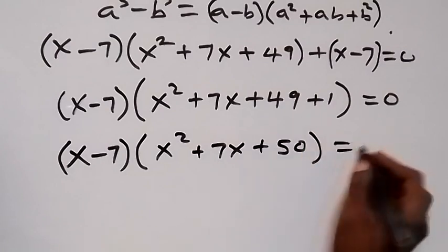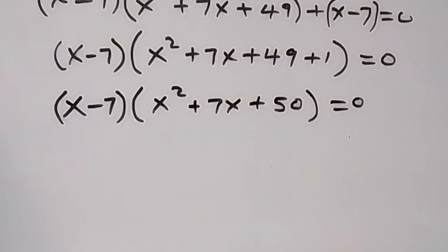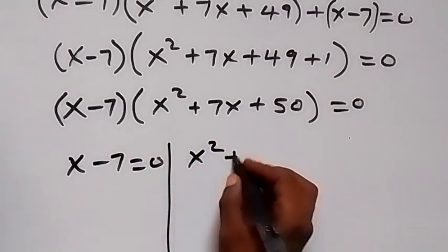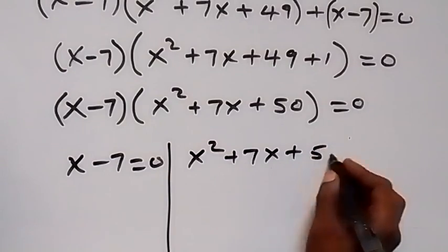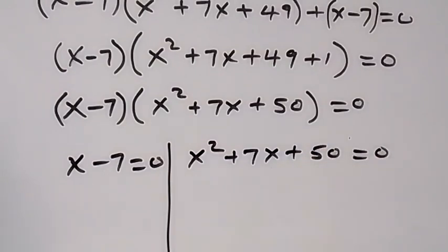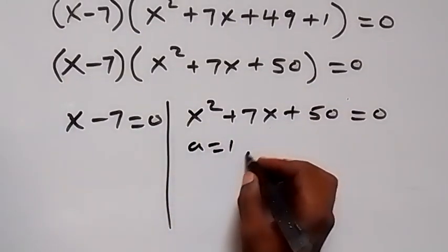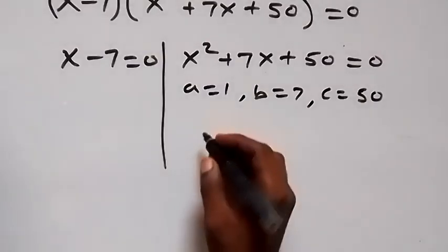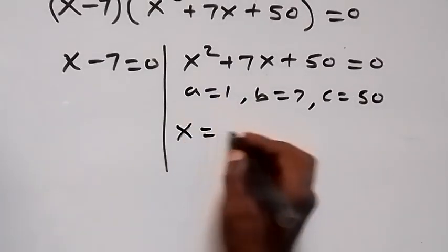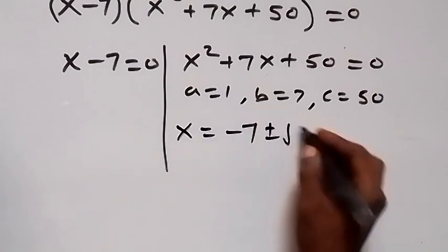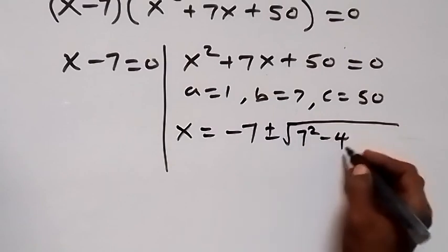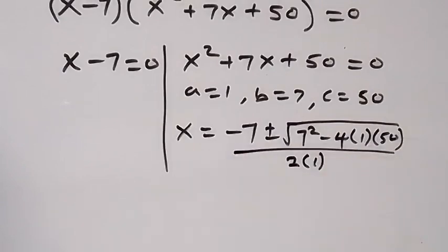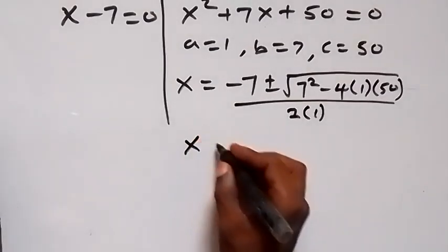Adding what we have gives us (x minus 7)(x² plus 7x plus 50) equals to 0. We have two possible cases: x minus 7 equals 0, giving x = 7, or x² plus 7x plus 50 equals 0. For this quadratic, a equals 1, b equals 7, and c equals 50. Using the quadratic formula: x equals minus b, that's minus 7, plus or minus square root of b² minus 4ac, all over 2a.